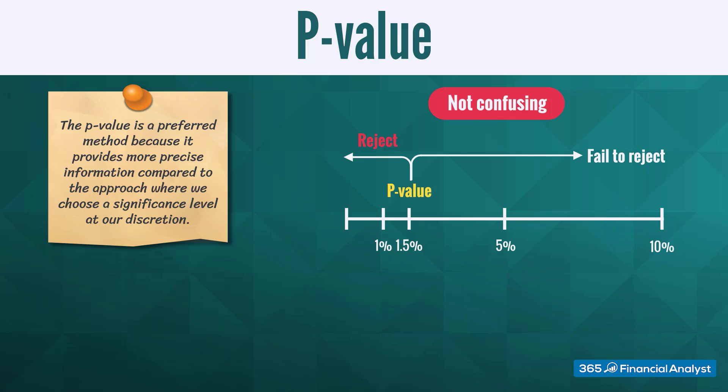The p-value is a preferred method because it provides more precise information compared to the approach where we choose a significance level at our discretion. Most researchers simply communicate a p-value of their findings and leave it up to the consumers of the research to interpret the results' statistical significance.